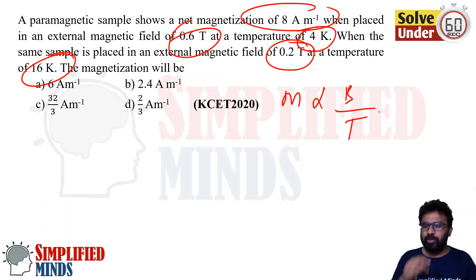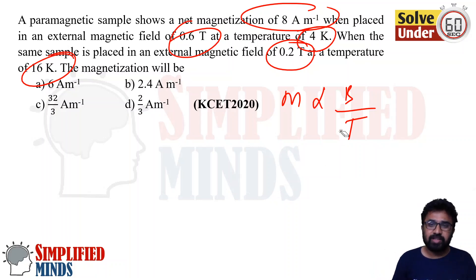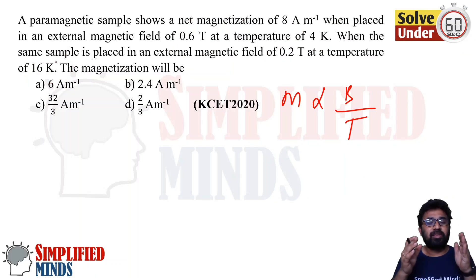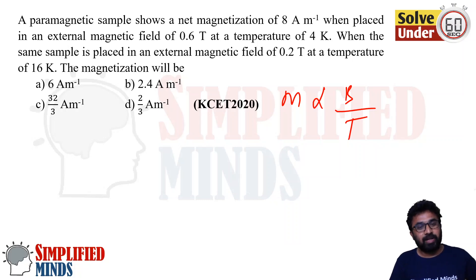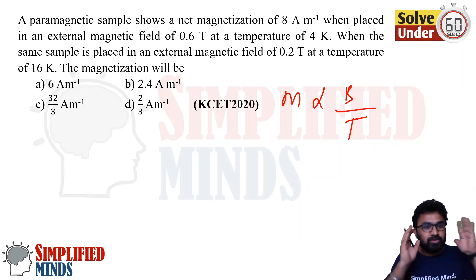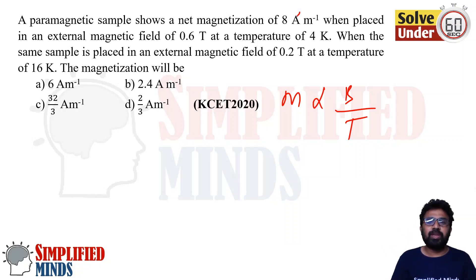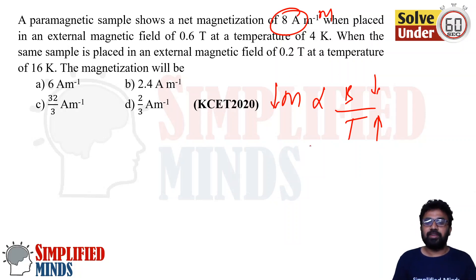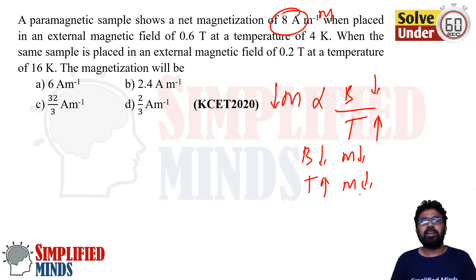We have the formula: M is proportional to B divided by T. It's very simple — first try to analyze the question and eliminate options. When the B value decreases, magnetization decreases. And when T increases, since it is inversely proportional, magnetization also decreases. So both effects cause M to decrease.